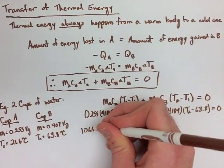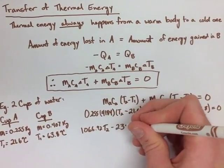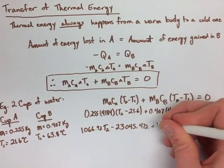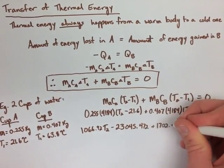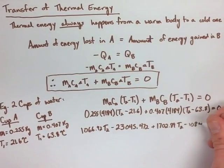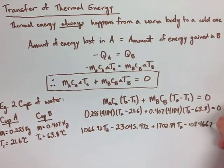So we go through and simplify the equation, getting 1,066.92 T2 minus 23,045.472 plus 1,702.89 T2 minus 108,466.25.